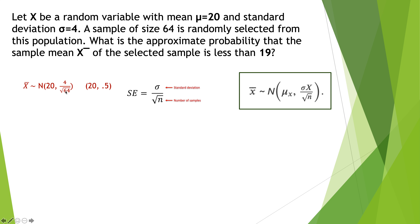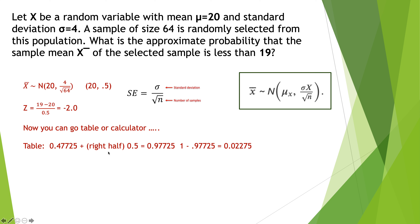The square root of 64 is 8, and 4 divided by 8 is 0.5. The z-score for 19 is (19 − 20) / 0.5 = −2. From the table: 0.47725, plus the right half — then subtracting from 1 — gives 0.02275. Or you could compute 0.5 minus the table area. Either way you get 0.02275, but the table approach is a lot more work.